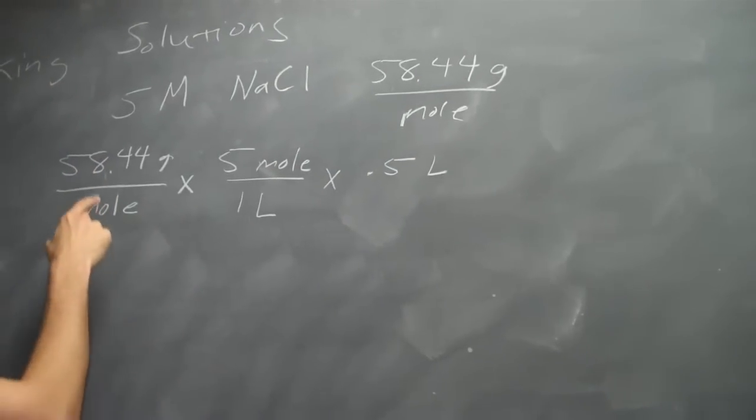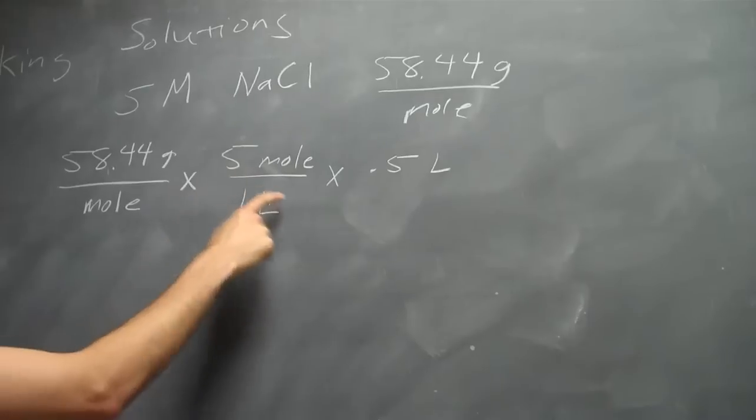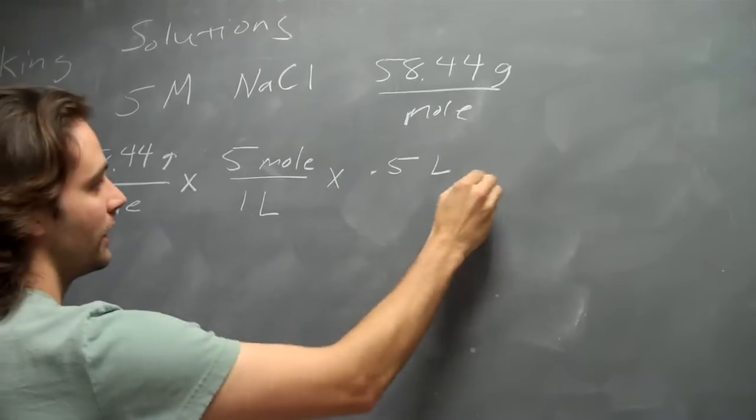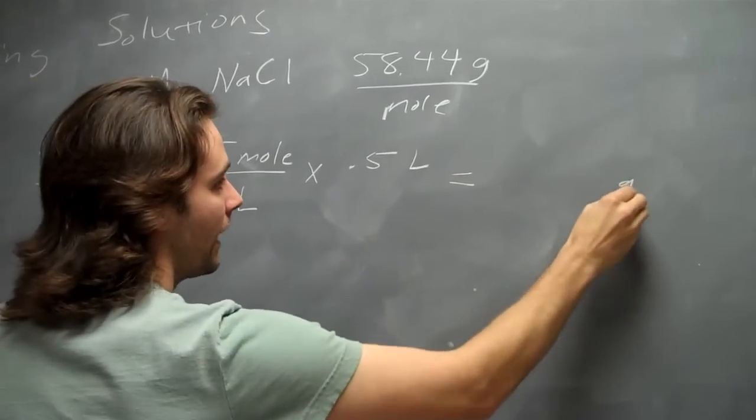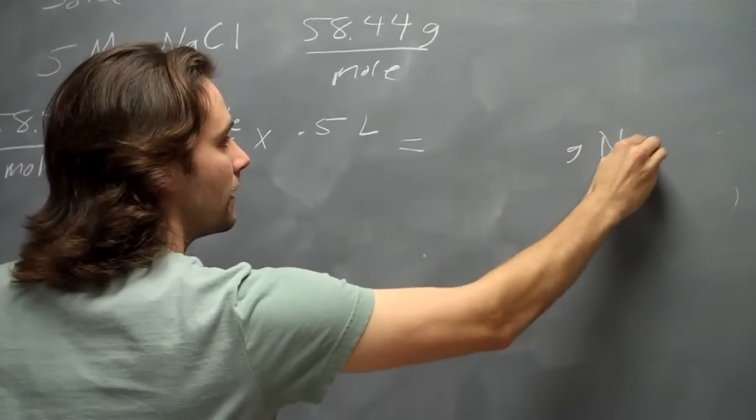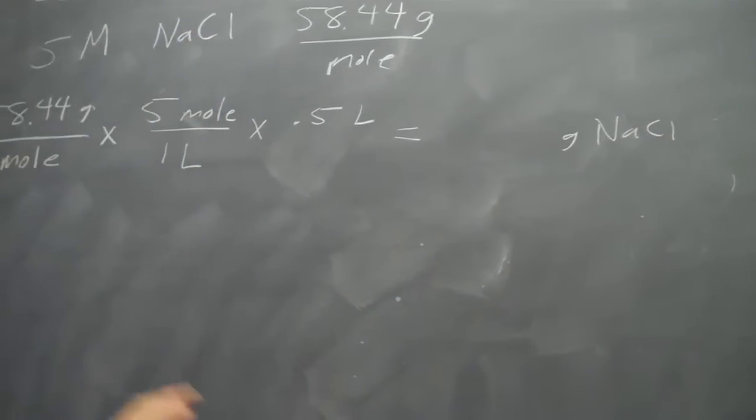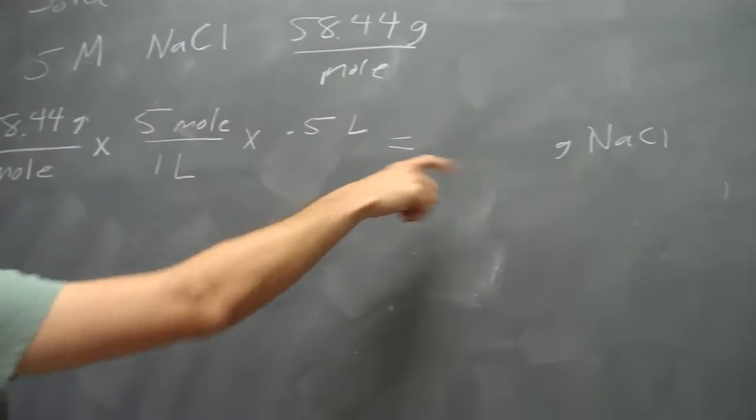And then you simply multiply 58.44 times 5 times .5. And that gives you how many grams of sodium chloride you need. And so you measure out this number of grams.